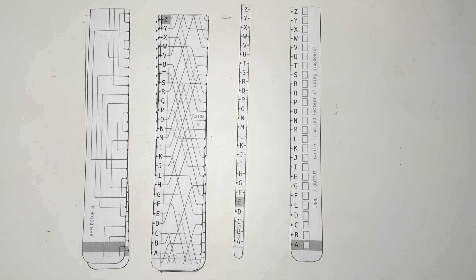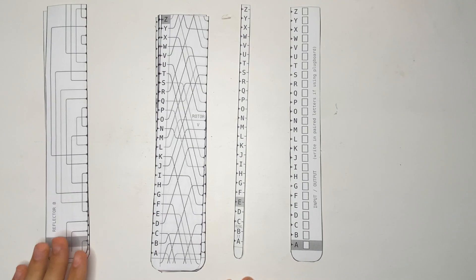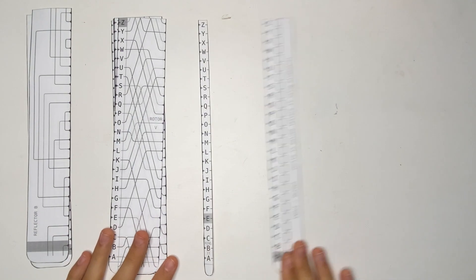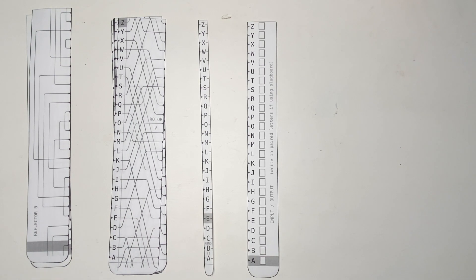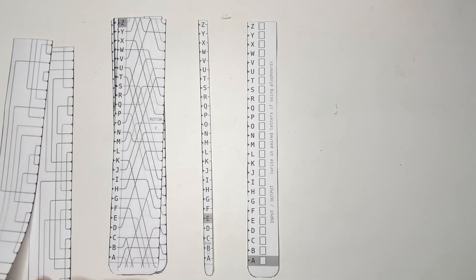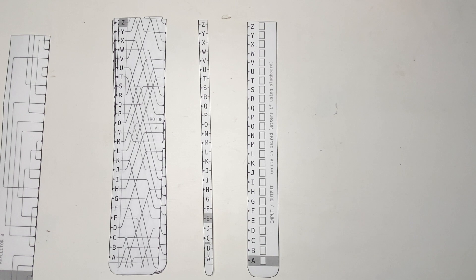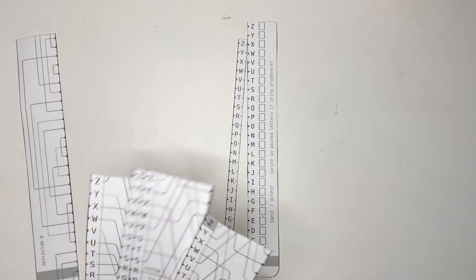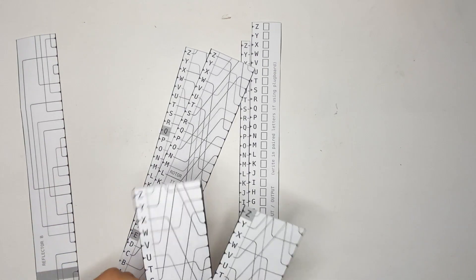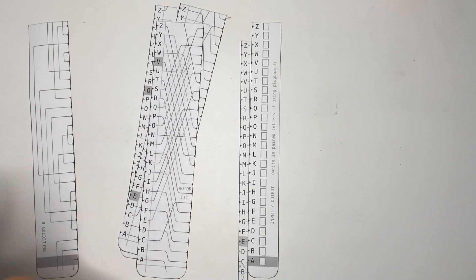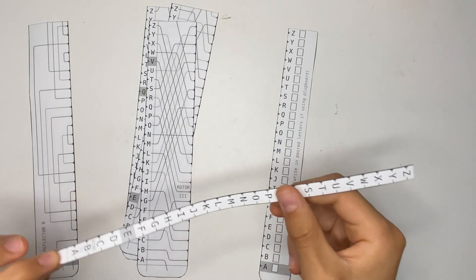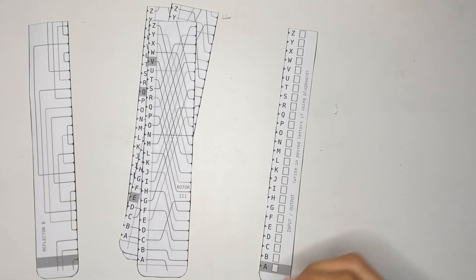So once you've cut it out you'll see a couple reflectors, a couple rotors, rings, and one input output. For the purposes of this we only need one reflector so I'm just going to use reflector B. And we only need three rotors so I'm just going to use rotors one, two, and three. And the rings, I'll come back to those at the end but you don't need them for this step.